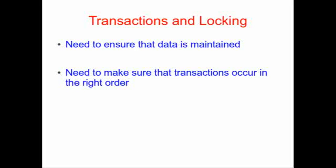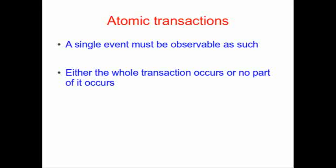Transactions and locking are required to make sure that your data is maintained and data integrity is assured. An atomic transaction is observed from the outside as a single event — either the whole transaction occurs or none of it occurs. It doesn't matter how big, complicated, or small the transaction is; the point is that the whole thing must occur.